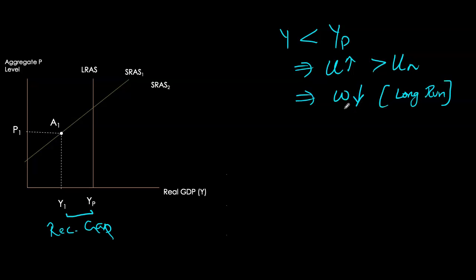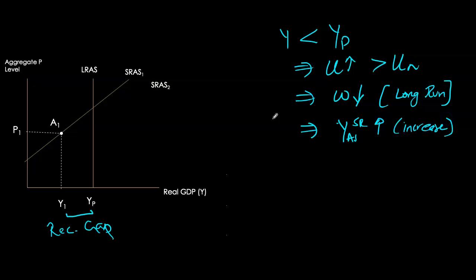Remember, wages always adjust in the long run because wages are sticky in the short run. And as wages start to be driven down in the long run, firms see an increase in their profitability, and that causes them to produce more over time. The short-run aggregate supply starts to increase. So in the long run, as wages adjust, short-run aggregate supply shifts to the right, reflecting this reduction in wages.